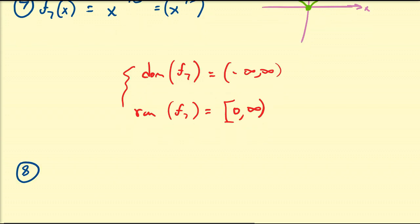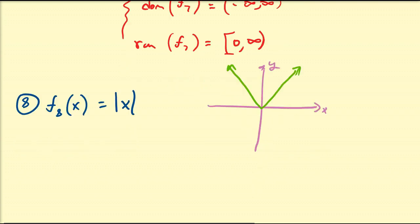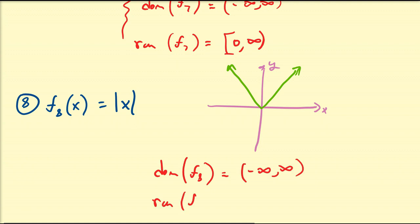Another function, f₈, is the absolute value of x. Remember, the absolute value is the distance from a number to 0. The absolute value of 0 is 0, the absolute value of 5 is 5, and the absolute value of negative 5 is 5. When you sketch all those points on an xy graph, you get a V-shaped graph. The domain of the absolute value function is all real numbers, and the range is all positive numbers including 0.